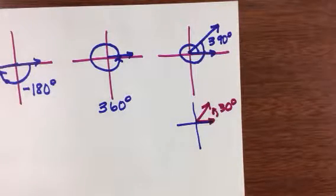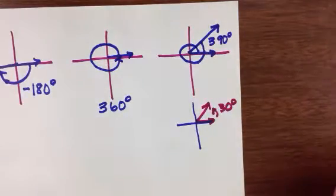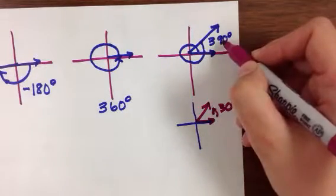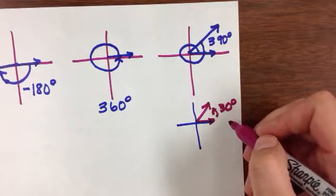when they're in standard position, they have the same terminal side. These angles are called co-terminal angles. Co-terminal angles are when you have two angles in standard position and they have the same terminal side. So 390 degrees and 30 degrees are co-terminal angles.